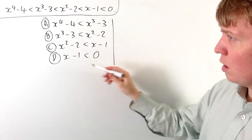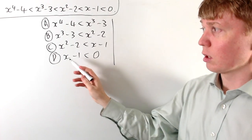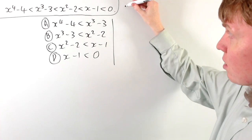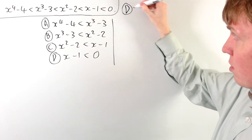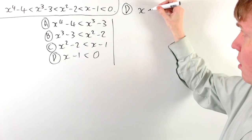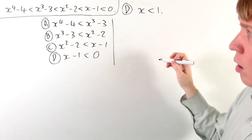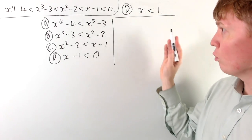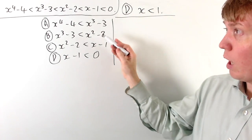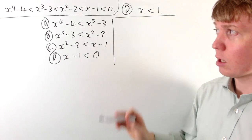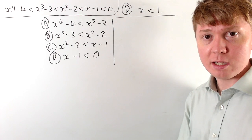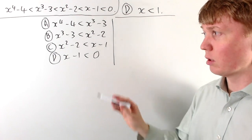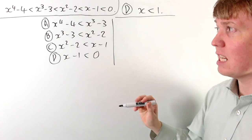We'll go through these in reverse order, starting with the simplest one. Inequality D just rearranges and gives us that x is less than 1, and there's no more information available from D. So whatever our x values are for A, B, and C, we know that x has to be less than 1.